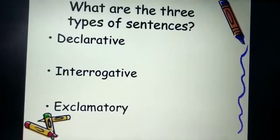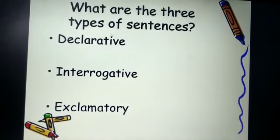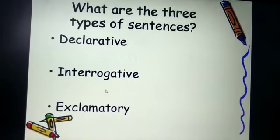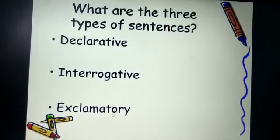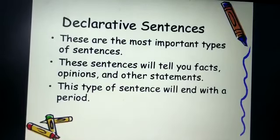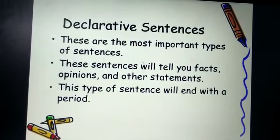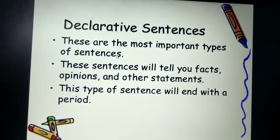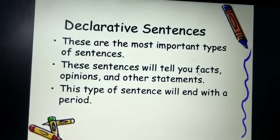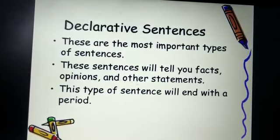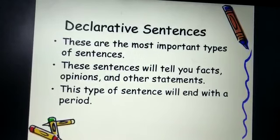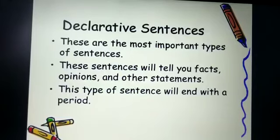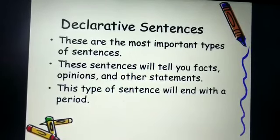Now these are the three types of sentences: first, declarative; second, interrogative; and third, exclamatory. I will explain to you what declarative sentences are. These are the most important types of sentences. These sentences will tell you facts, opinions, and other statements. This type of sentence will end with a period, or it will indicate a time period in which the sentence takes place.